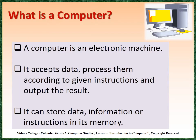Hi children. Now we are going to learn what is a computer. You have already known what is a computer. It is an electronic machine. It accepts data, processes them according to given instructions and outputs the results: Input, Process and Output. Also, a computer can store data, information or instructions in its memory.